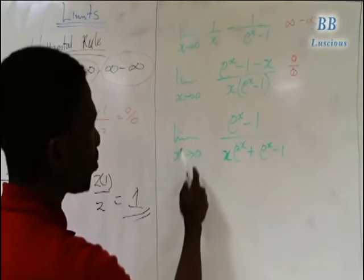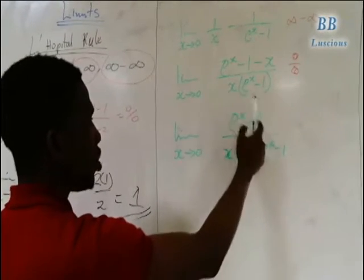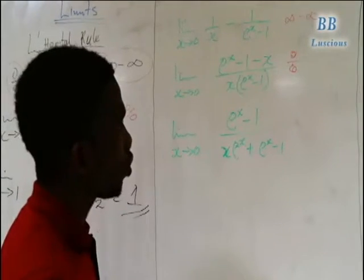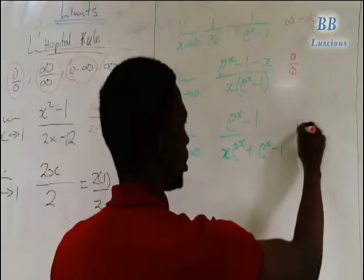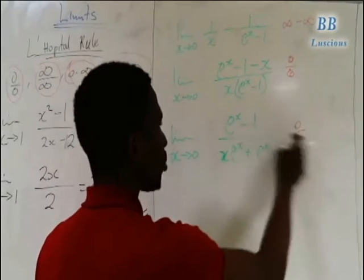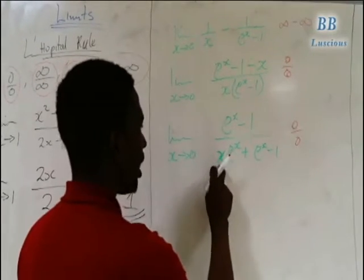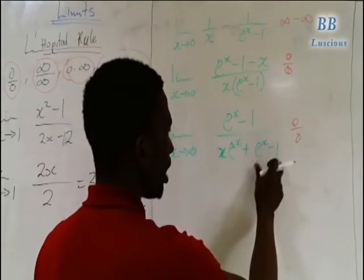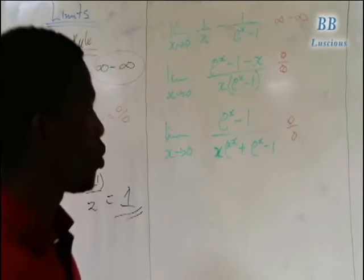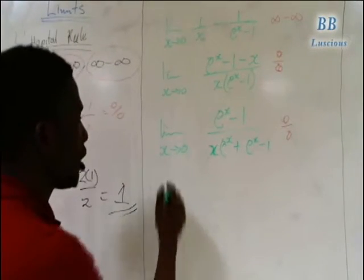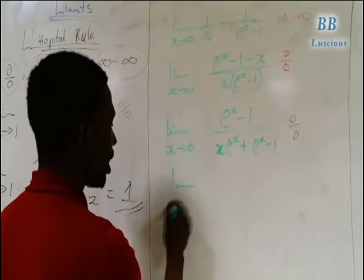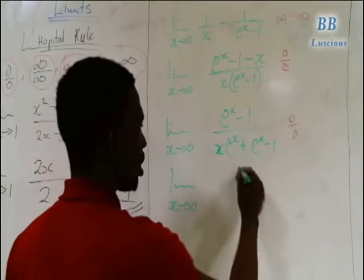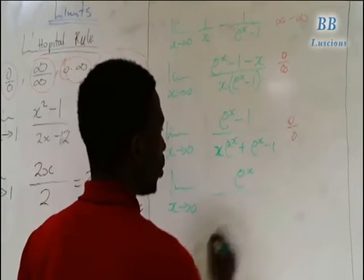When we substitute 0 into this, we still get 0 over 0, because 1 minus 1 gives 0 in the numerator, and 0 times 1 plus 1 minus 1 gives 0 in the denominator. So we need to find the derivative one more time: limit as x tends to 0.